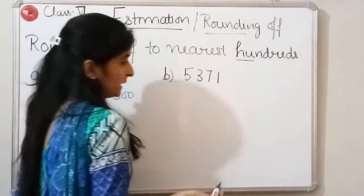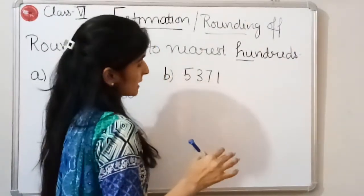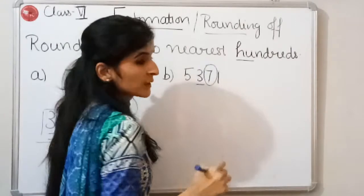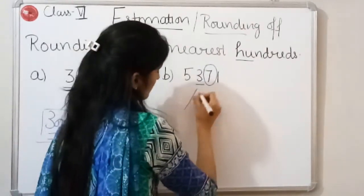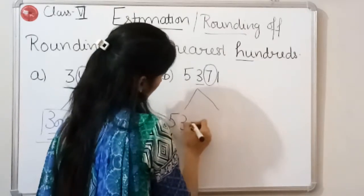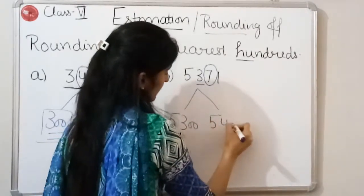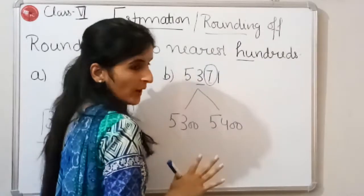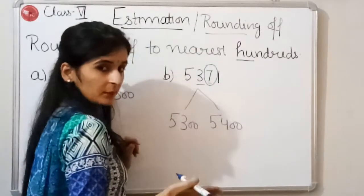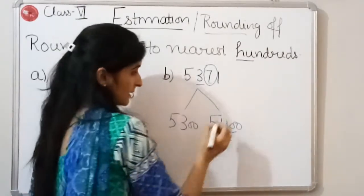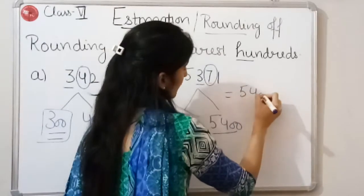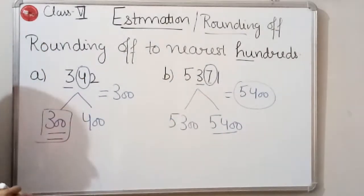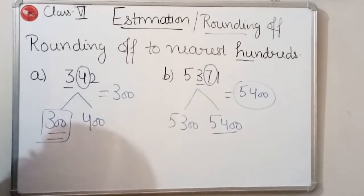For the next example, the digit on hundreds place is again 3. We highlight the digit on its right. The number lies between 5300 and 5400. We compare 7 with 5 — since 7 is greater than 5, it rounds off to the next hundreds, which is 5400.